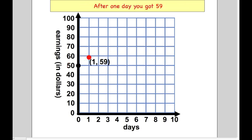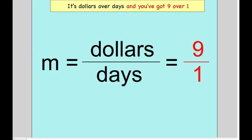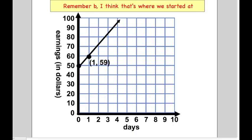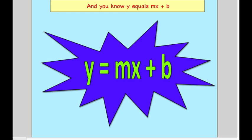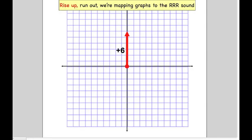After the first day you got fifty-nine. Now you got two points, you can start drawing a line. The slope of that line, remember rise over run — it's dollars over days, and you got nine over one. Remember B, I think that's where we started at — fifty dollars up on the graph, that's the Y intercept. And you know Y equals MX plus B, now you got Y equals 9X plus 50.